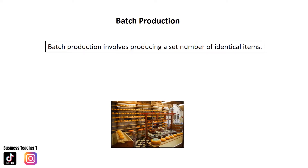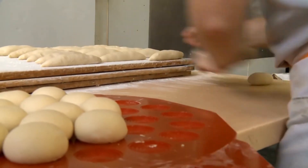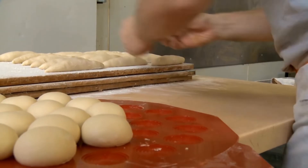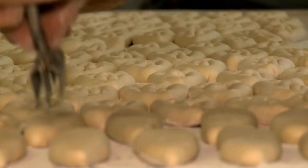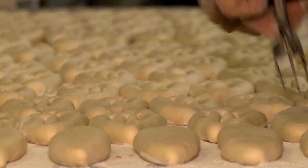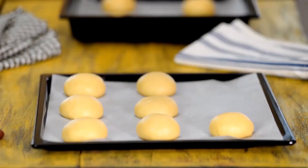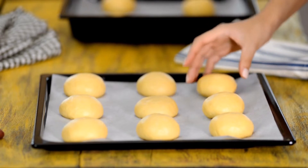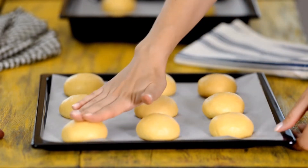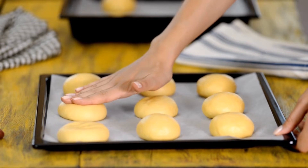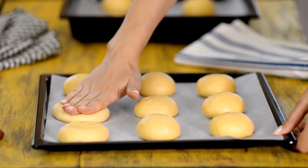Examples of batch production include furniture, newspapers, and bakeries, amongst other things. Batch production may be used when demand for a business's products is regular and not just a one-off. A particular operation is carried out on a group of identical products, and then the batch moves to the next operation, so all products pass through the same production process.